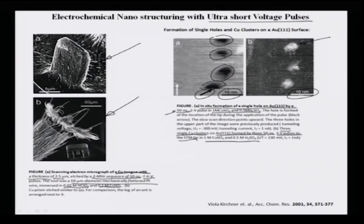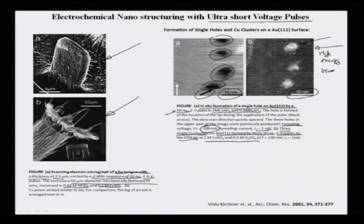With ultra-short voltage pulses you can actually write as well as develop tools for electrochemical machining at the scale of a few tens of nanometers. The tunneling voltage is in the range of minus 300 millivolts and the current is about 1 nanoampere. This resolution compares well with high energy beam processes like FIB, X-ray lithography, and so on.